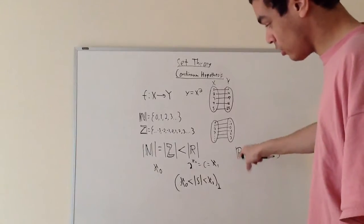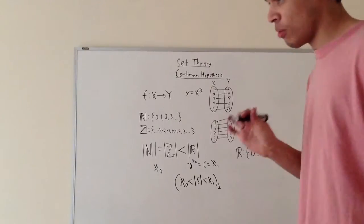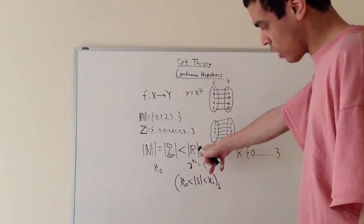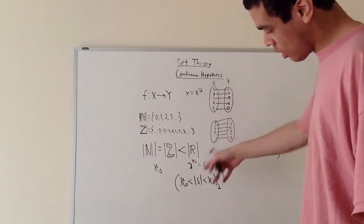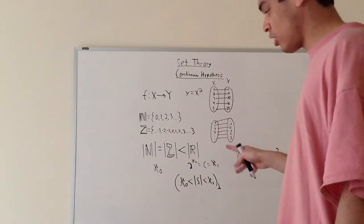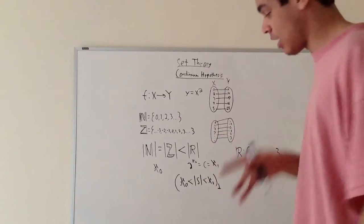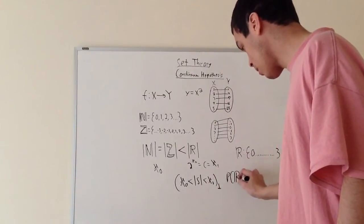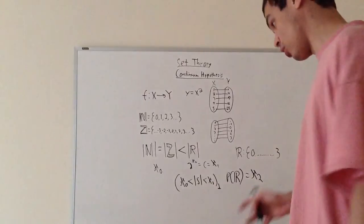The cardinality of the reals can also be written as C — cardinality of the continuum — or as 2 to the aleph-not. This is really the idea that the reals are the power set of the naturals. So the power set of the reals would equal aleph-2, which is the next uncountably infinite cardinal. Cardinals are basically like aleph-not, aleph-1, aleph-2 — they're degrees of infinity. When people say 'infinity,' they often don't realize there are actually different levels of infinity.